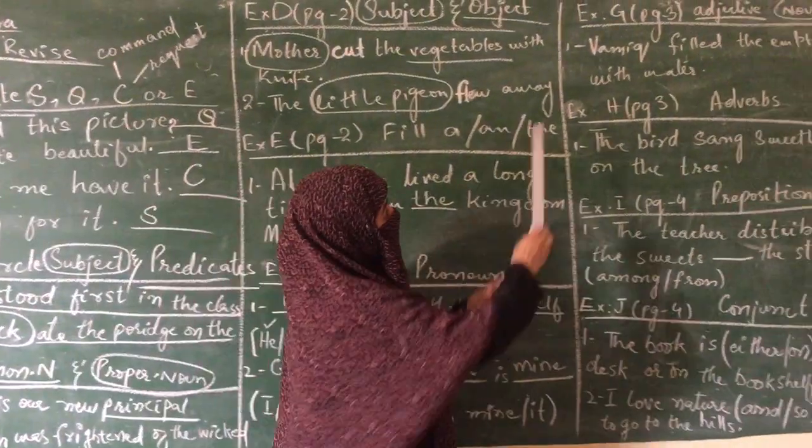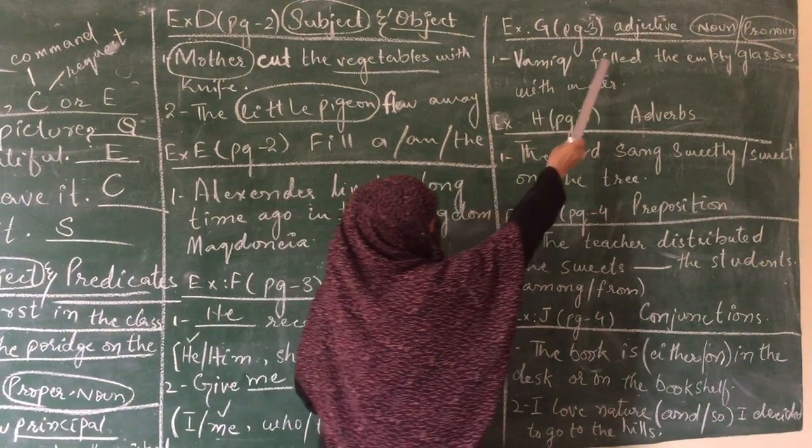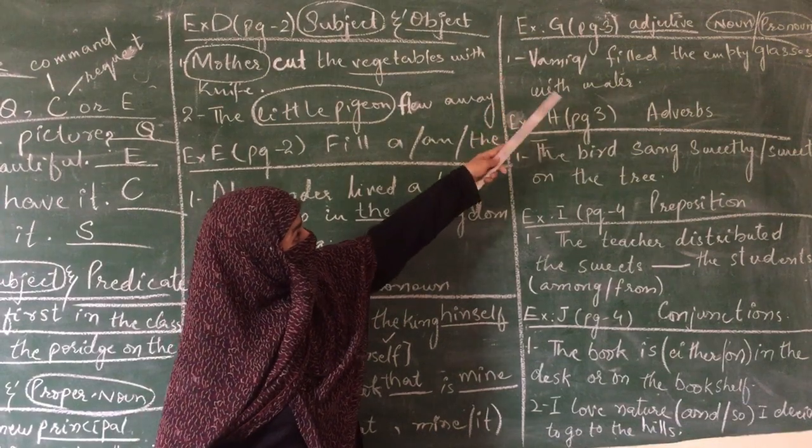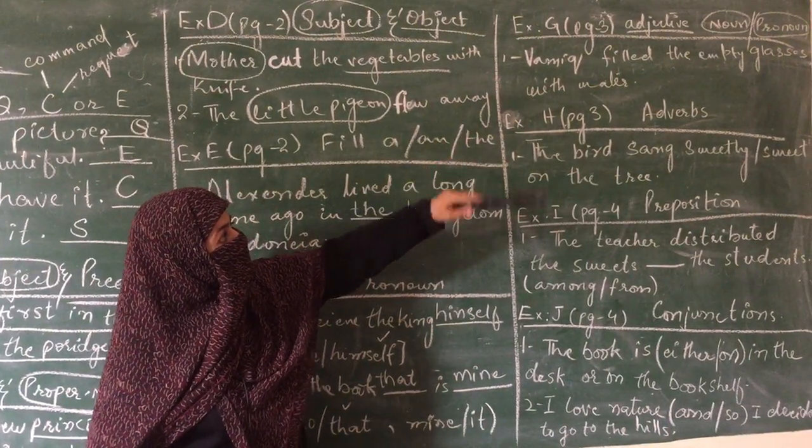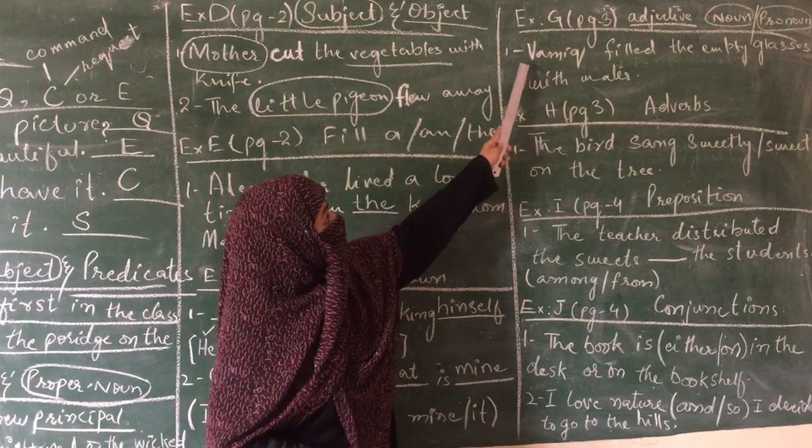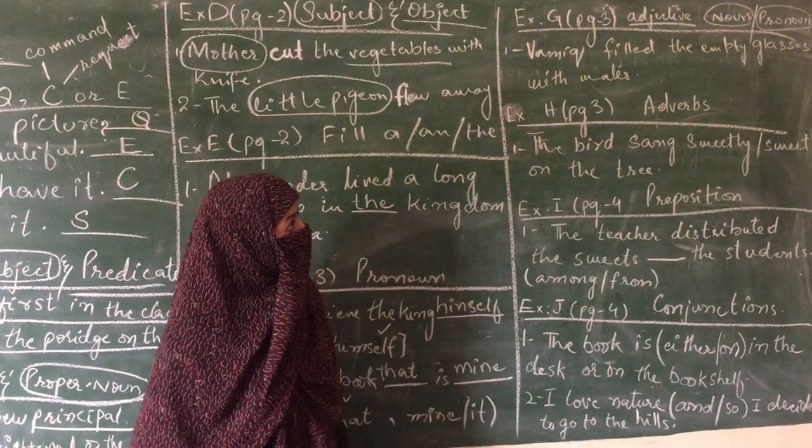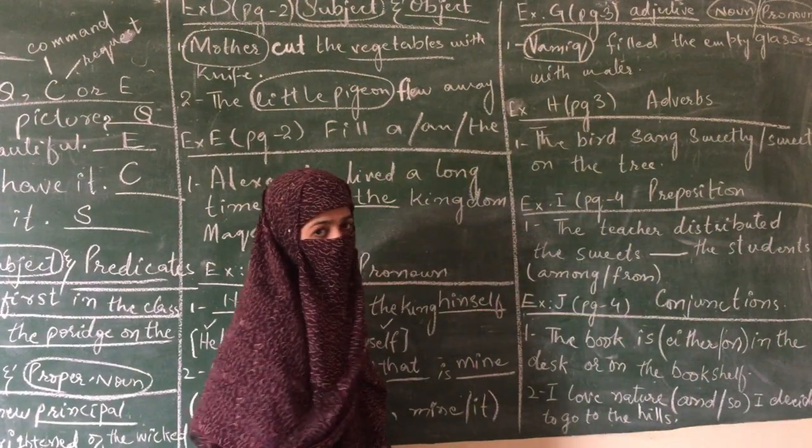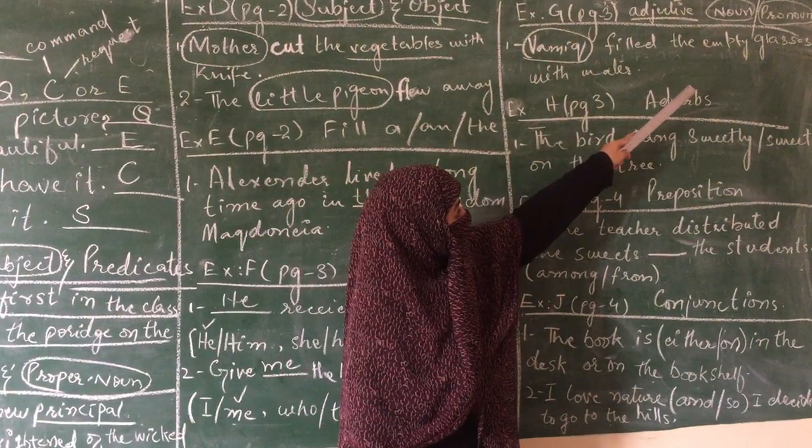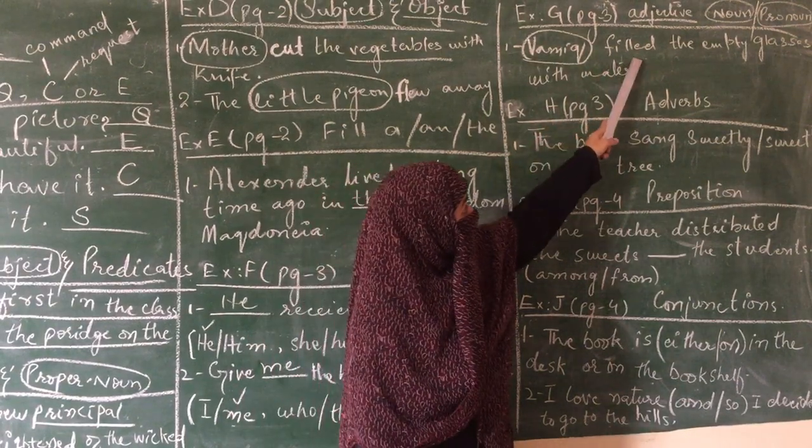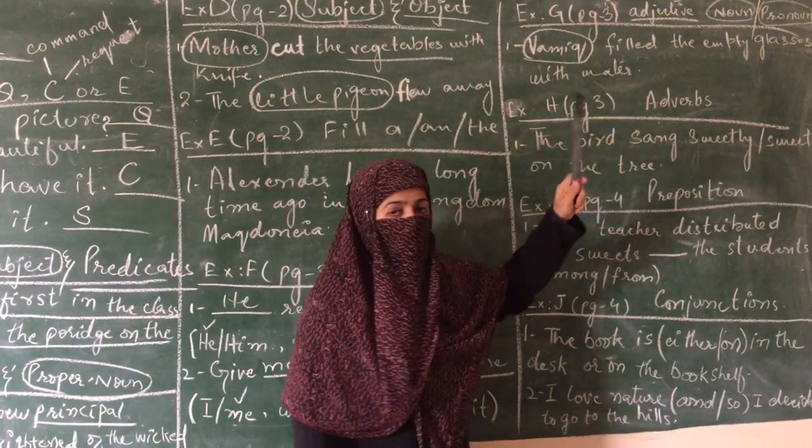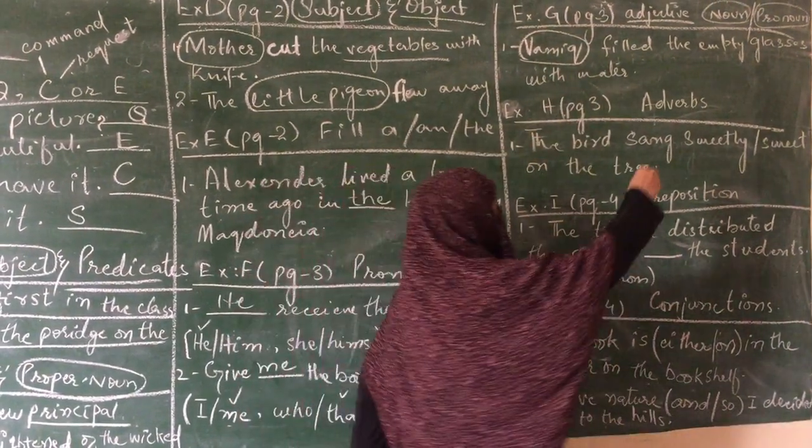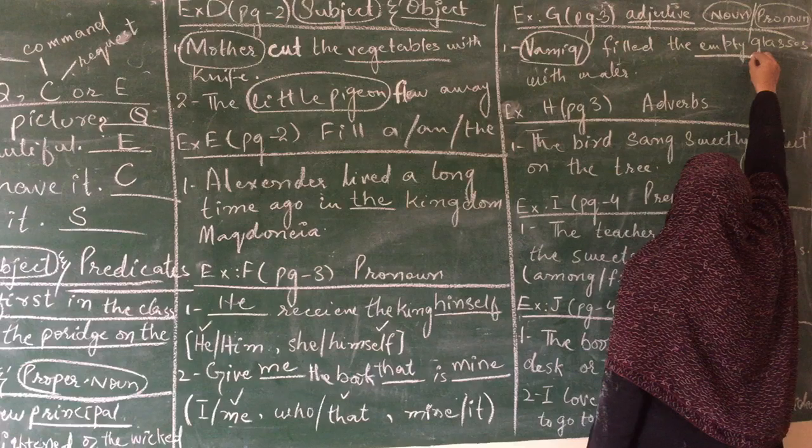Now in exercise G on page number 3, we underline adjectives and circle noun and pronoun. Again, adjective is the word which tells you about your noun or object. Vamik filled the empty glasses. Vamik is our noun, so we circle Vamik here in this sentence. What did Vamik do? Vamik filled the glasses. And how are the glasses? Empty. The word empty is our adjective. That's why we are going to underline empty.